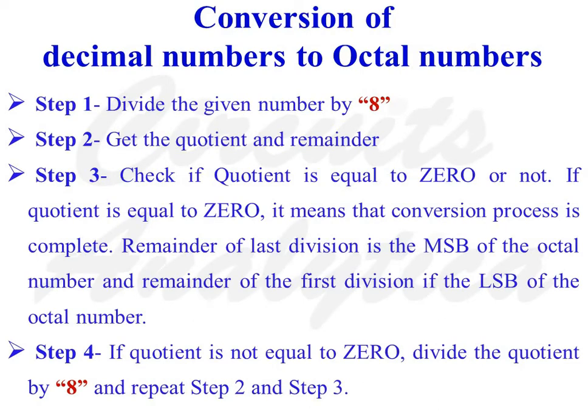To convert a decimal number to an octal number, divide the given number by 8. Find the quotient and remainder. Check if the quotient is equal to 0 or not. If quotient is equal to 0, it means the conversion process is complete. The remainder of the last division operation is the MSB of the octal number, and the remainder of the first division is the LSB of the octal number.